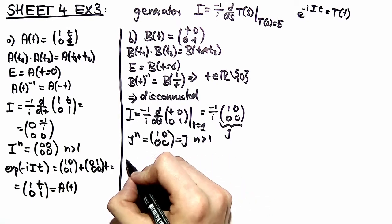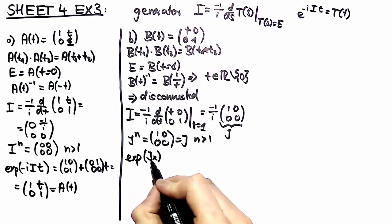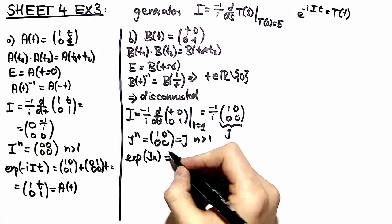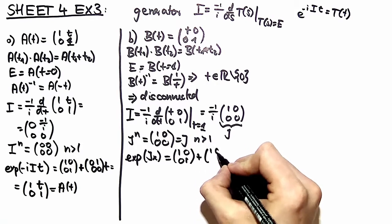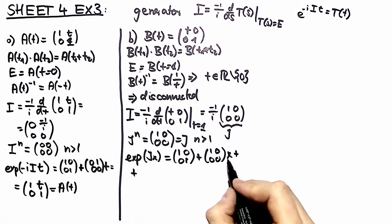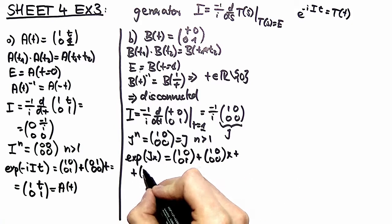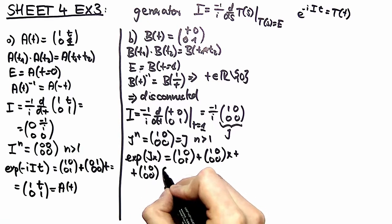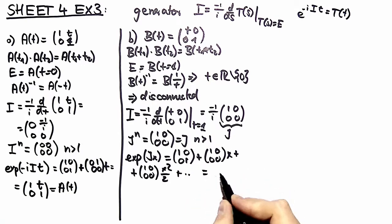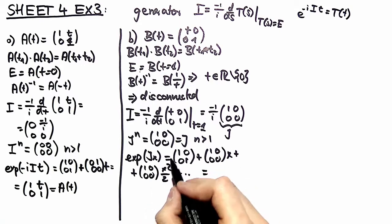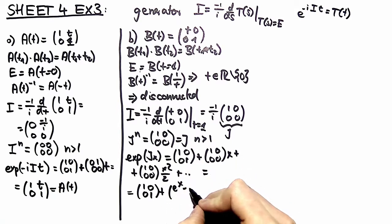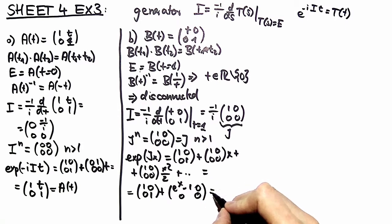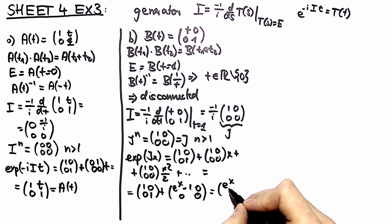So therefore we can compute again the exponential. We take x because we have to modify this variable. We Taylor expand it, and then you have always j times your Taylor series exponential. So you have j to the nth times x squared over 2 and so on. You recognize here an exponential function and here the identity matrix. You have the identity matrix plus an exponential function where the identity element is left out and every other element is 0. So you have e to the x on the upper left corner of this matrix and a 1 on the lower right corner.